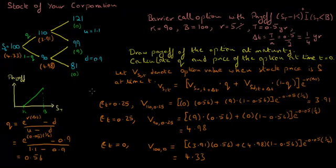So we have just priced a European barrier option using risk-neutral valuation in a two-period binomial tree model. If there are any questions or comments, please feel free to post. Thank you.